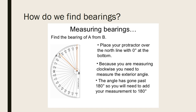You continue counting: 180, 190, 200, 210, 220, 230, 240, 250, 260, 270, 280, 290, 300, 310, 315. So the answer — A from B — equals 315 degrees.